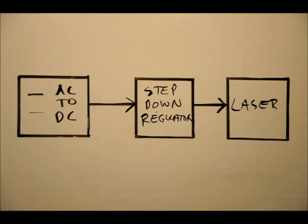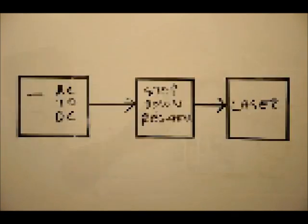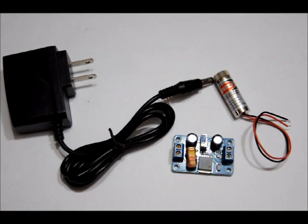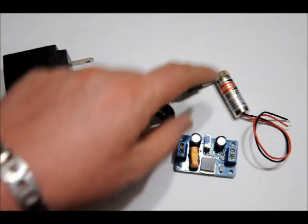And after we do an example of that, what I'm going to do is I'm actually going to show you how to build a step down regulator using an LM317. So as you can see, I've got my wall adapter, my regulator, my laser.